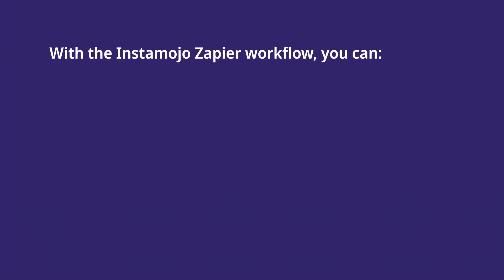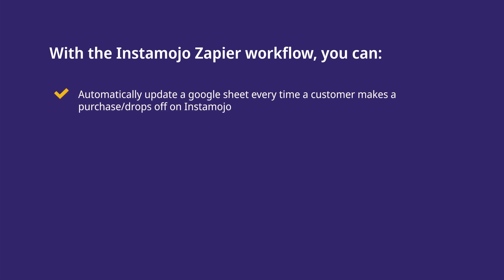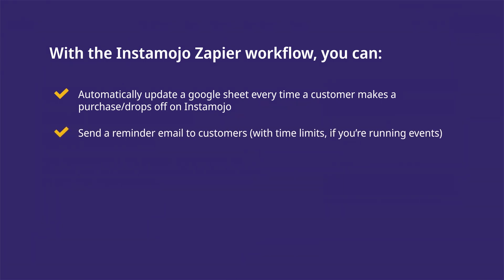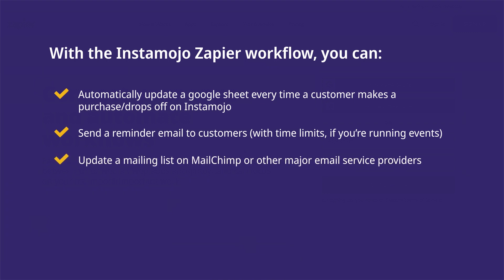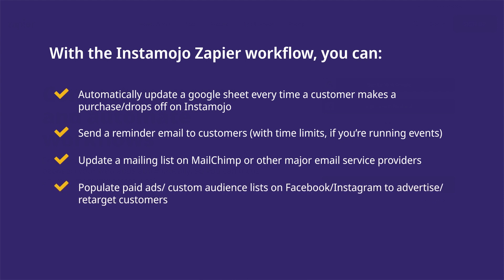With the Instamojo Zapier workflow, you can automatically update a Google Sheet every time a customer makes a purchase or drops off on Instamojo, send a reminder email to customers with time limits if you're running events, update a mailing list on MailChimp or other major email service providers, populate paid ads or custom audience lists on Facebook and Instagram to advertise or retarget your customers. You can also build deeper integrations with apps like Zoom and Calendly.